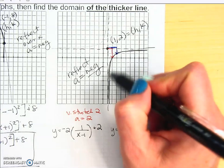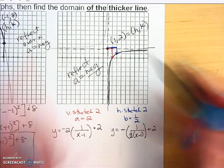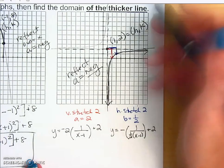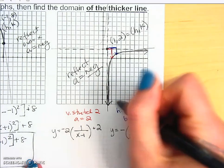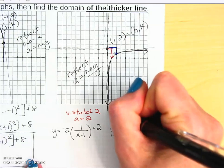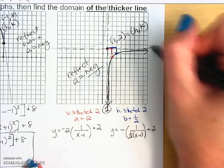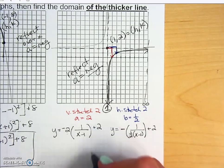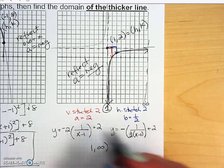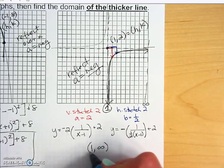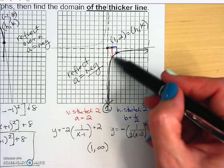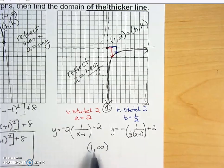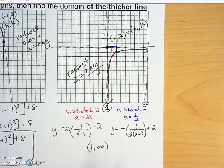For the domain restriction, the solid piece goes down here on the right side. The left boundary is at x equals one, and the right boundary is infinity. So the domain is one to infinity, with one excluded using a parenthesis since the graph never actually reaches x equals one.